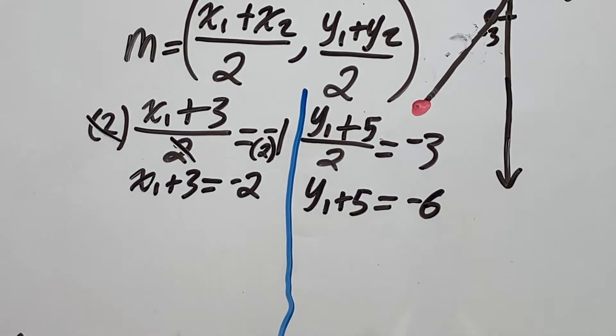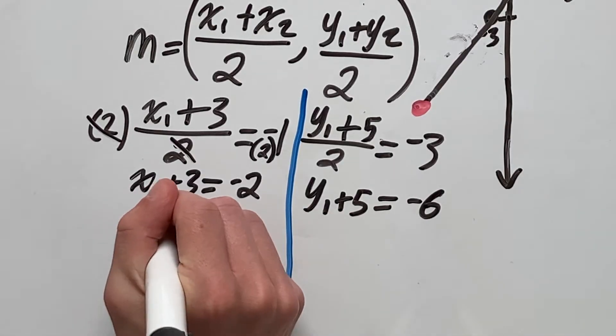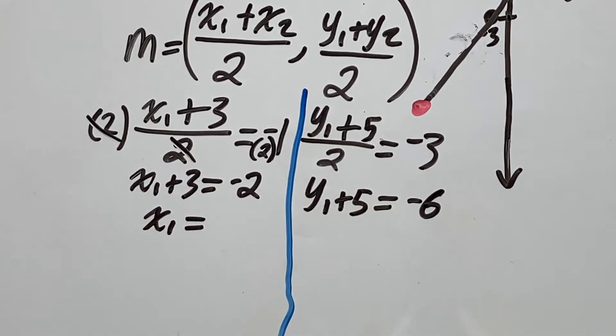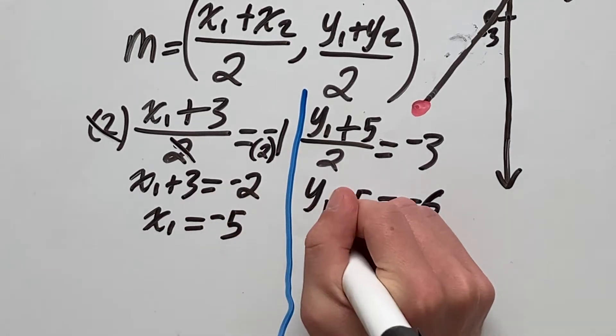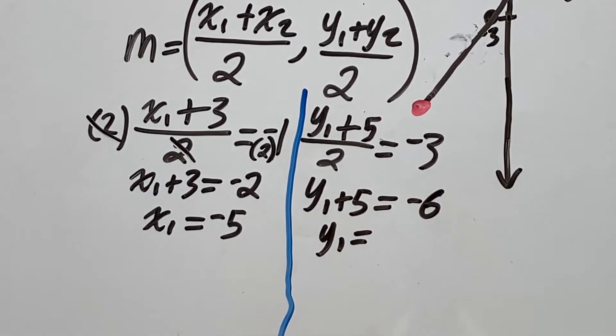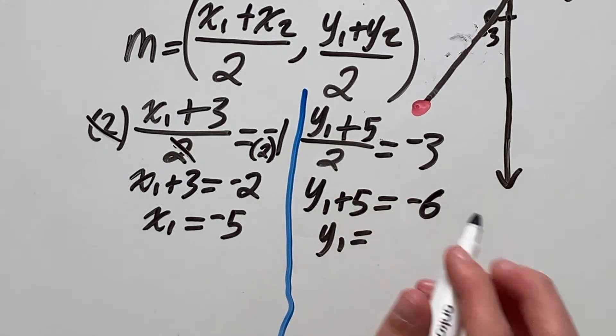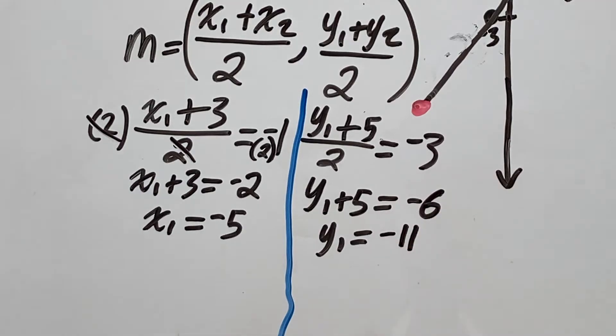Now we can get rid of the 3 to get x all by itself. So subtract 3 from both sides, which gives us x1 equals negative 3 minus 2, which is negative 5. And y1 equals negative 6 minus 5, which is negative 11.